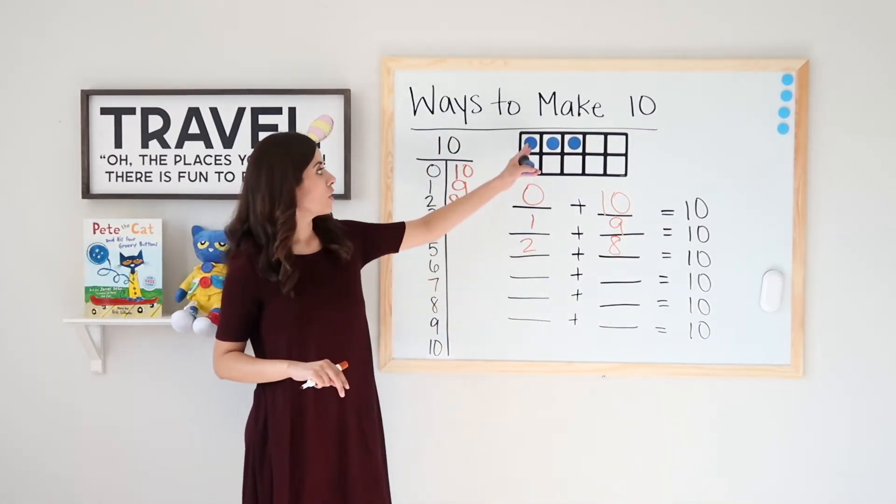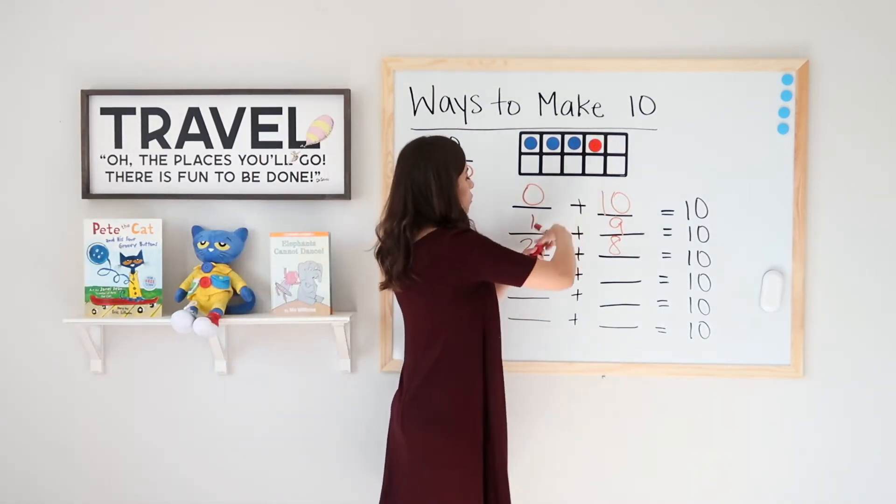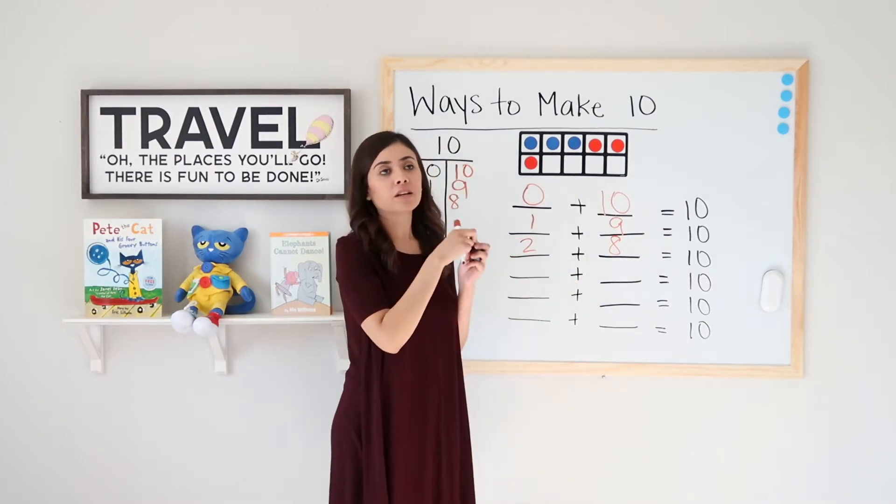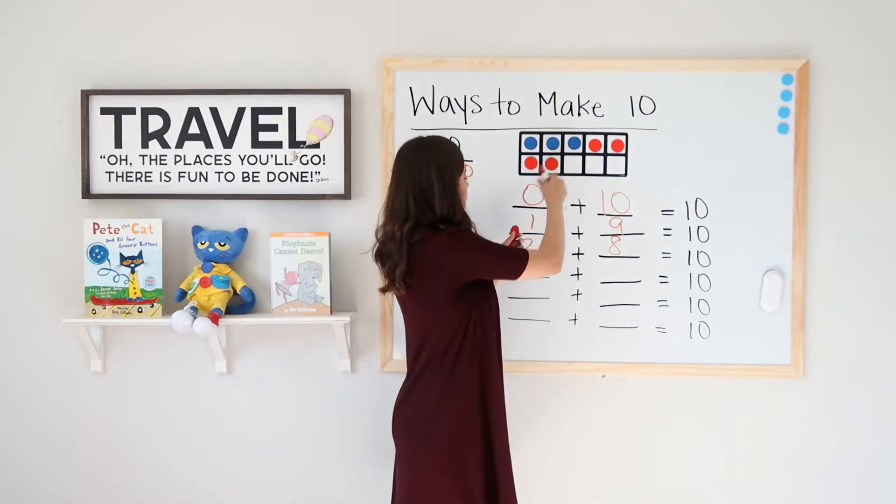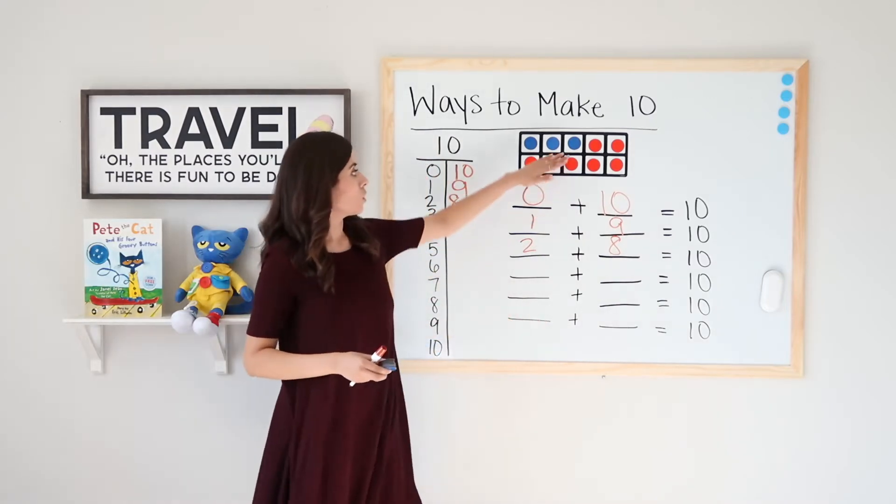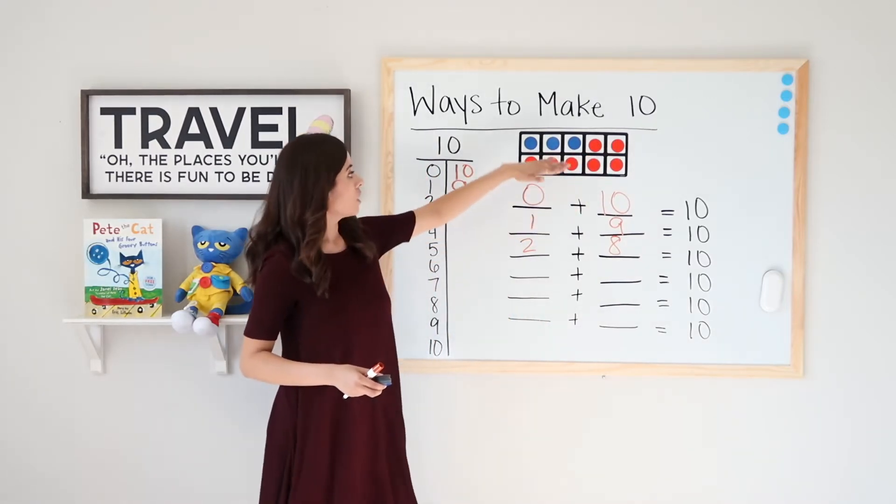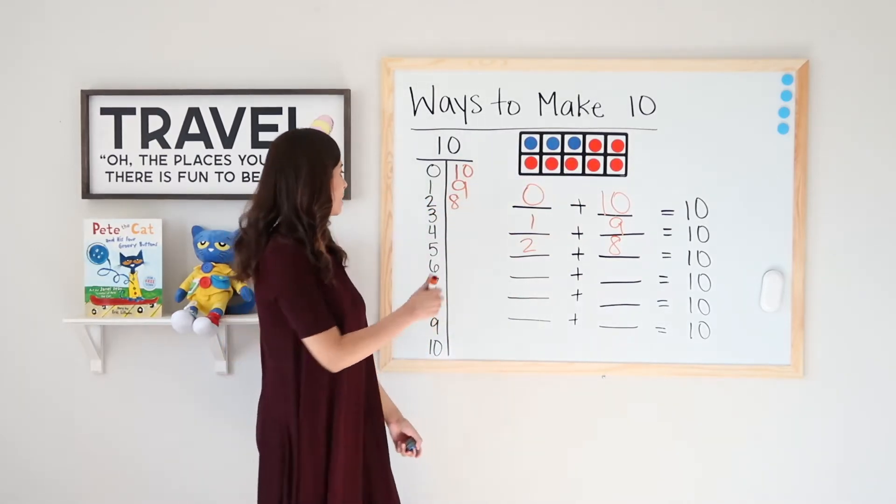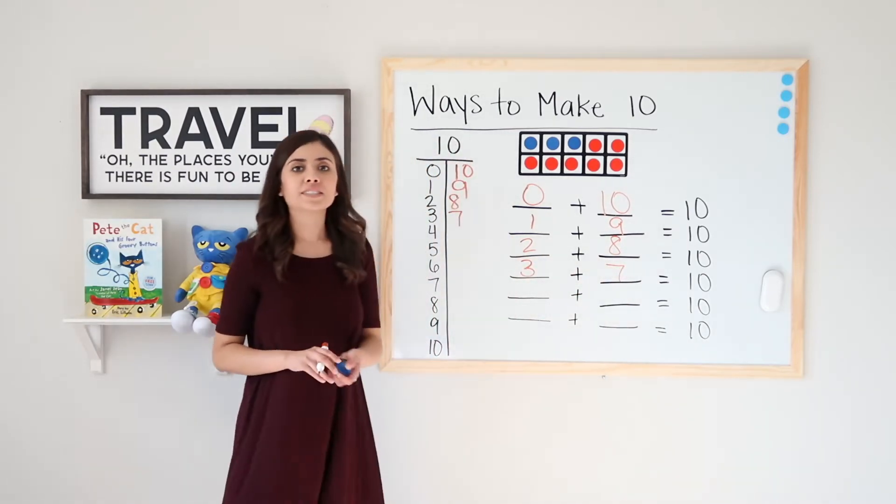Now I have 3 blues. Let's go ahead and fill the rest of the 10 frame with red and see how many red it took to get from 3 blue dots to 10 total dots. So 5, 6, 7. 3 blue dots plus 7 red dots equals 10.